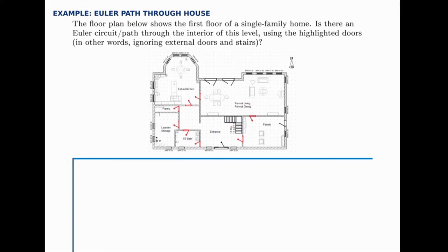In this example we're going to look for an Euler path or circuit through the floor plan of this house. We're looking specifically for an Euler circuit or path through the interior using the highlighted doors — the doors that are in red. We're going to ignore the exterior doors, the stairs, and any windows you could travel through, so just the doors that are listed.